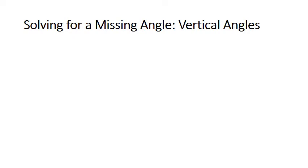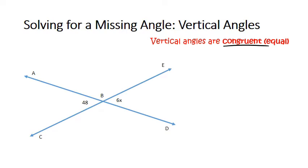How do you solve for a missing angle with vertical angles? Well, first of all, you have to know that vertical angles are congruent or equal to each other. So when you see a problem like this, the two angles that are directly across from each other are vertical angles and they're going to be equal to each other.